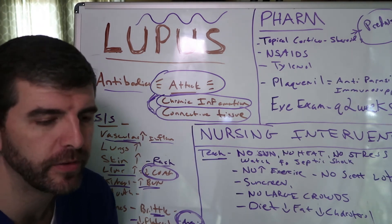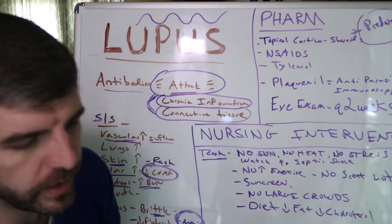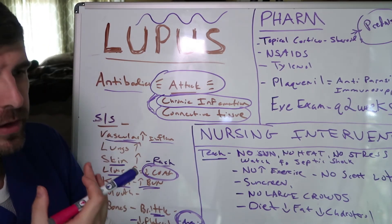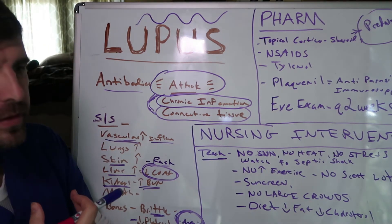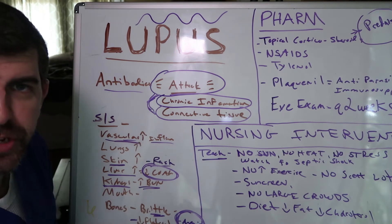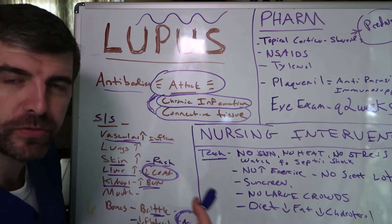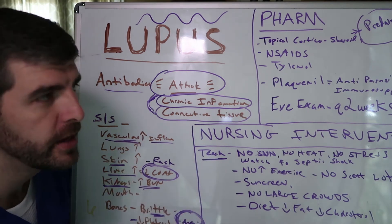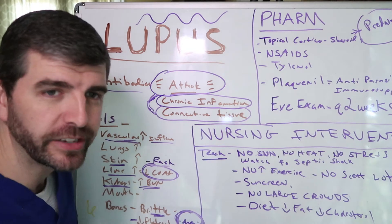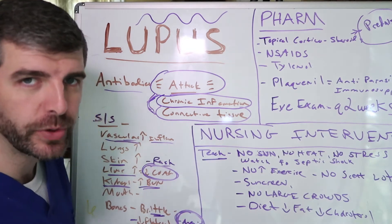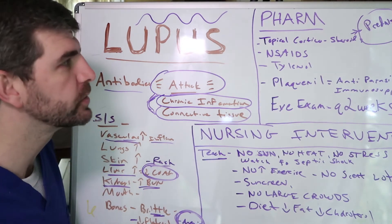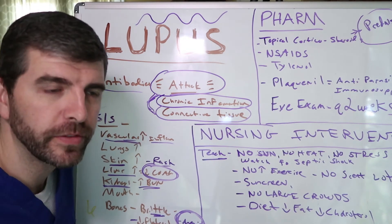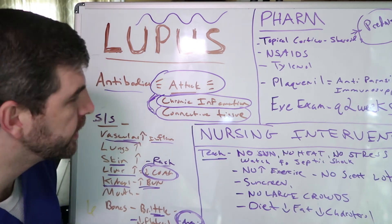A lot of times the disease will come and go, making it very hard for patients to determine when it's going to come back. Patients will have periods of remission, and then it'll come back and attack the body again. It's very frustrating — I actually had an aunt who had lupus and it's very, very debilitating.